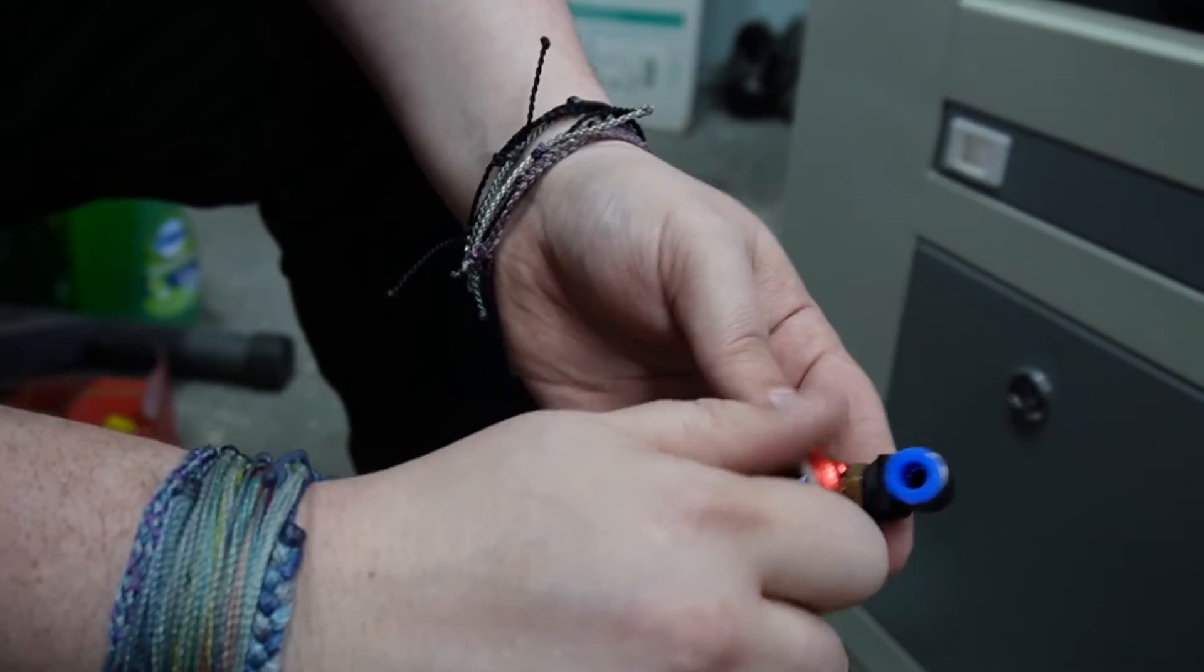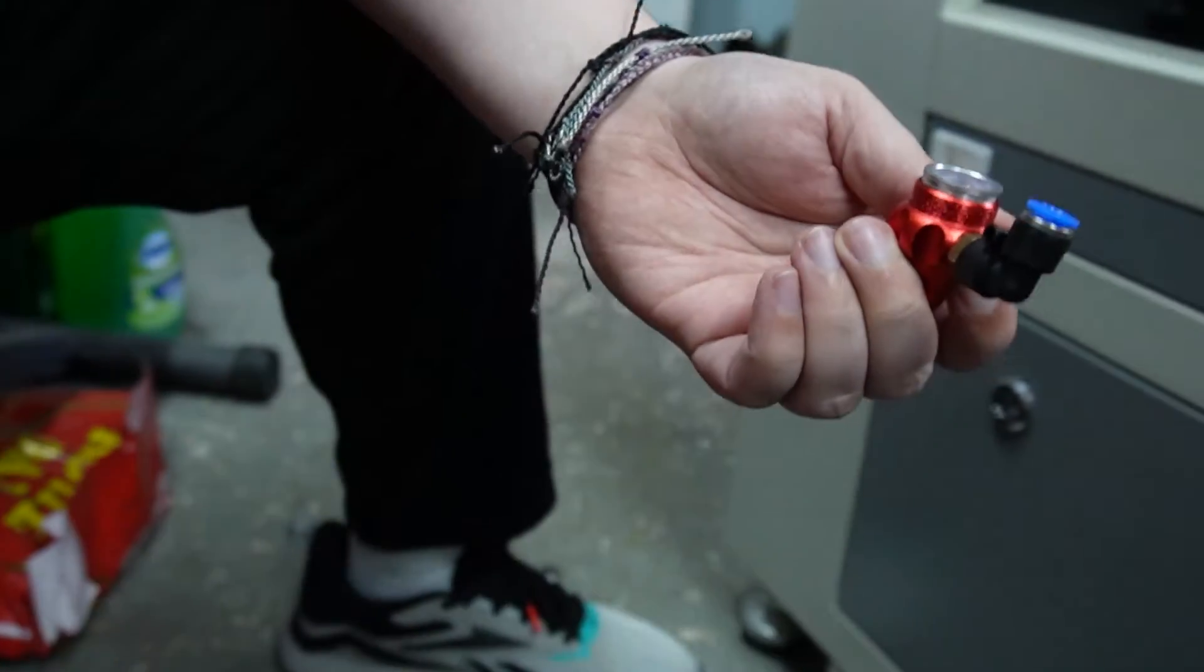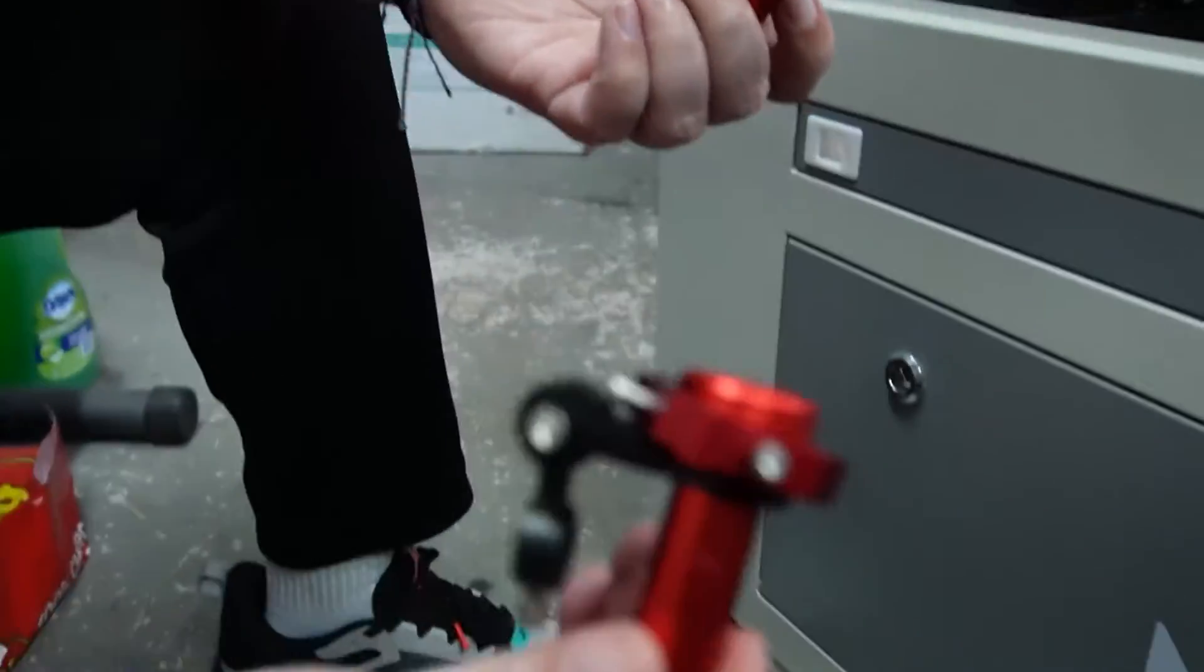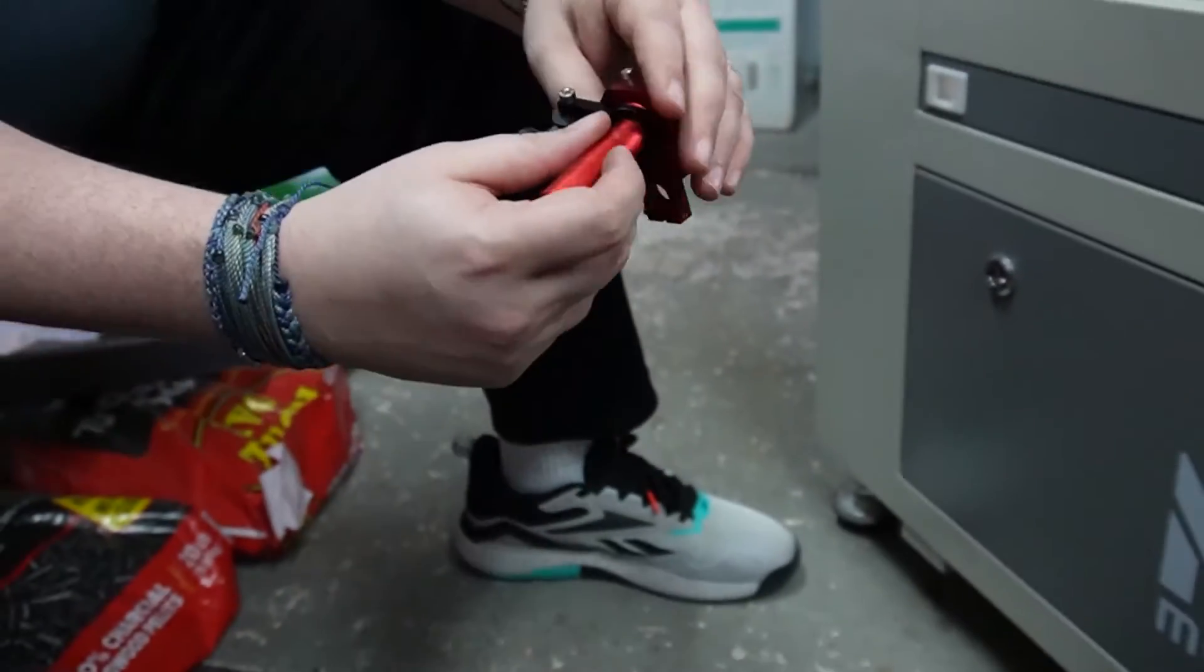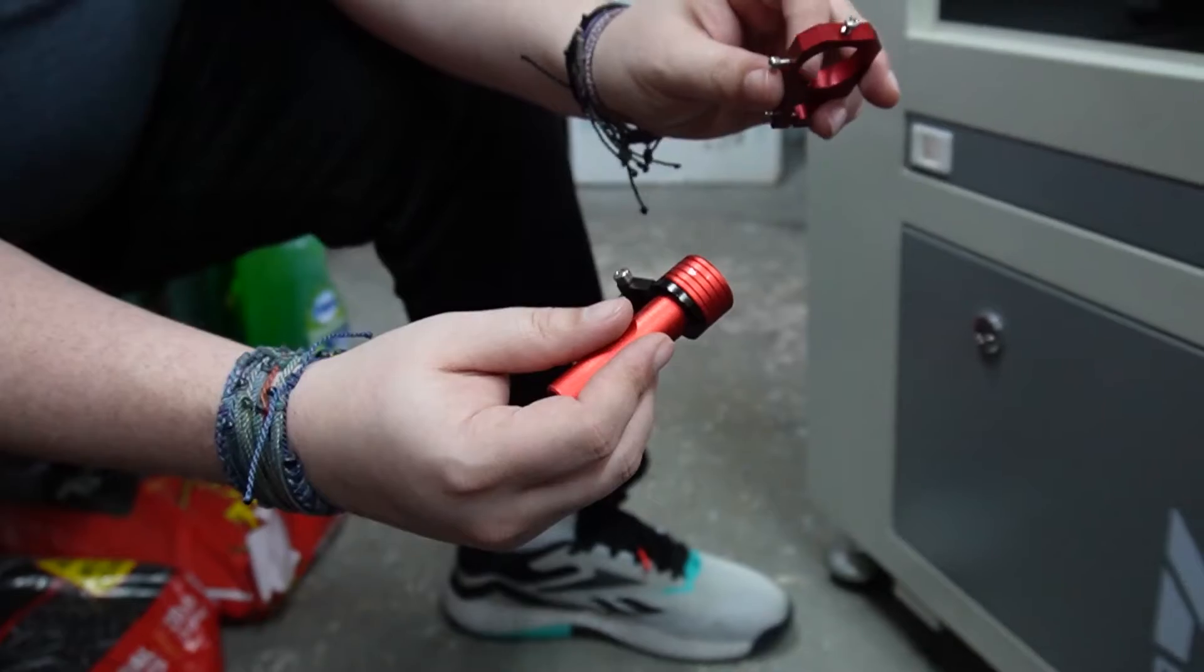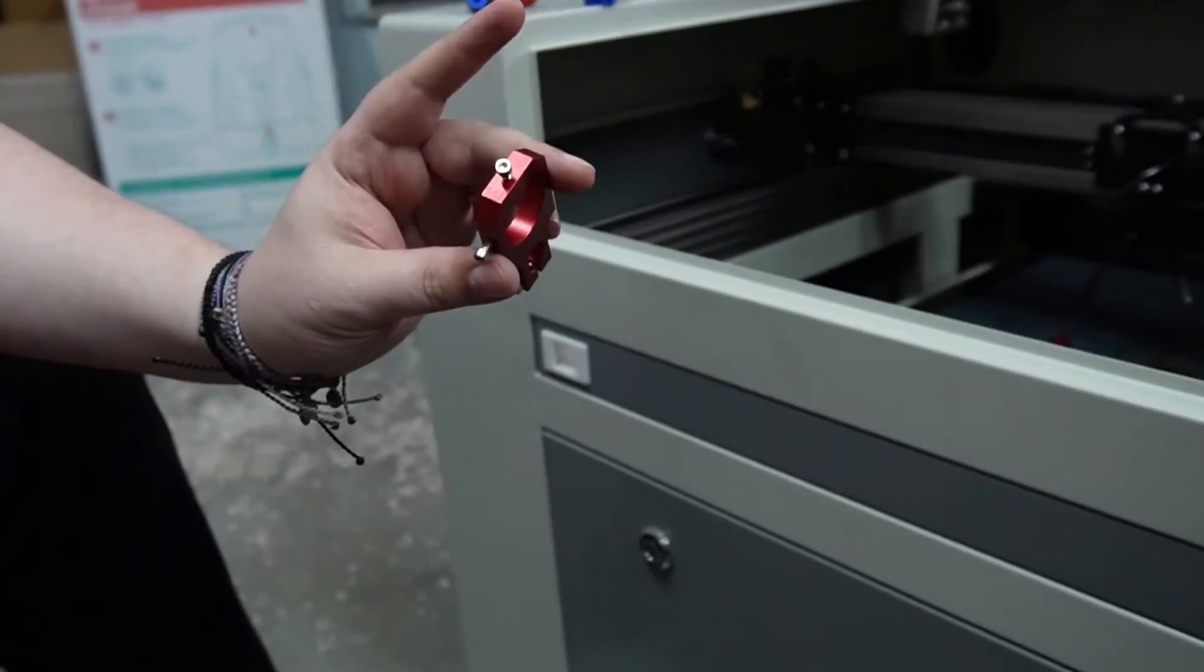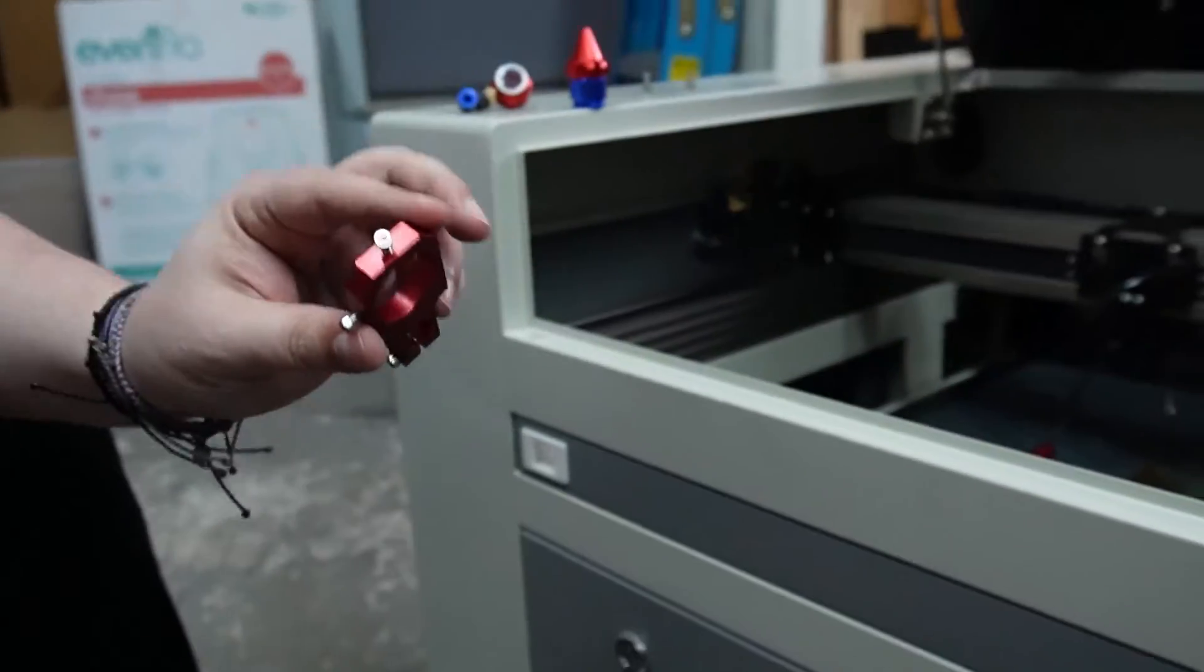You can also pull off the air assist part - that will go in the new piece. And we are done with the back side of this, but we will want this. This is for the autofocus, so this will need to go onto the new piece.